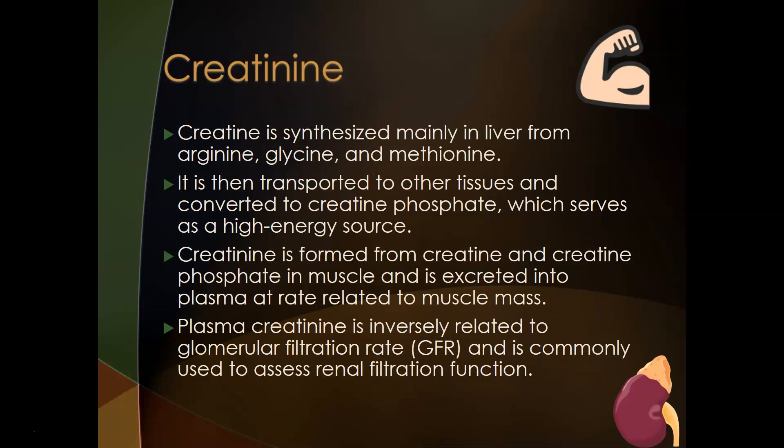The second test for renal function is creatinine. Creatine is synthesized mainly in the liver from arginine, glycine, and methionine. It is transported to other tissues, where it is converted to creatine phosphate — its usable form. Creatine phosphate is a storage form of ATP, the high-energy molecule used especially in muscle. When you need energy, creatine phosphate donates its phosphorus back to ADP to regenerate ATP to power your muscles during exercise.